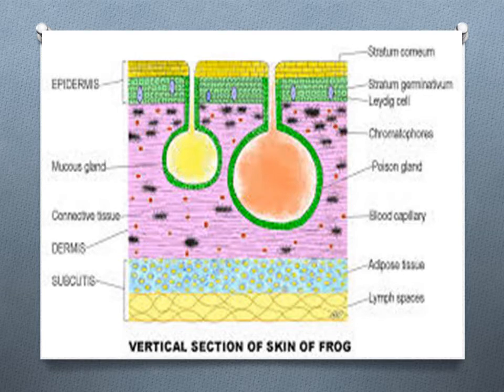This slide shows the vertical section of skin of a frog. The upper portion of the slide includes the epidermis, the outer portion of the skin. Below the epidermis is the mucous gland, and the other gland is the poisonous gland, present inside the connective tissue. Below lies the dermis and subcutaneous layer, which includes adipose tissue and lymph spaces.